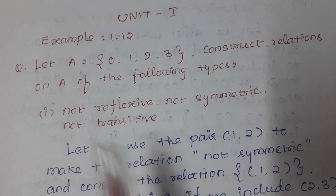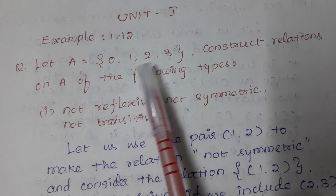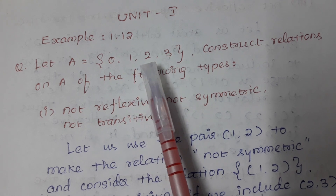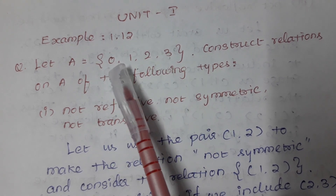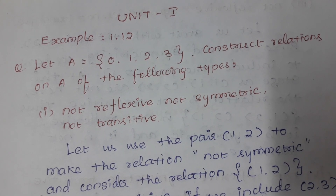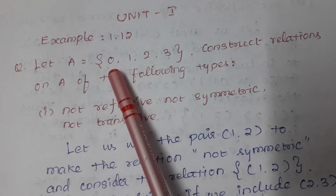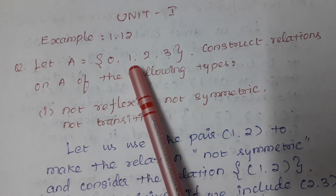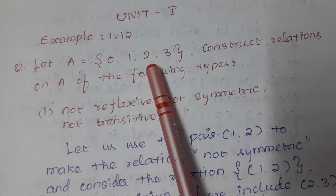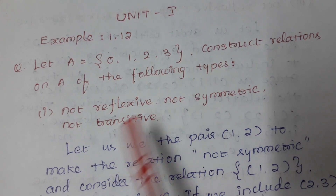For reflexive, the relation must contain (0,0), (1,1), (2,2), (3,3). That is the definition: (a,a). So (a,a) is (0,0), (1,1), (2,2), (3,3). If the relation contains all these pairs it is reflexive.